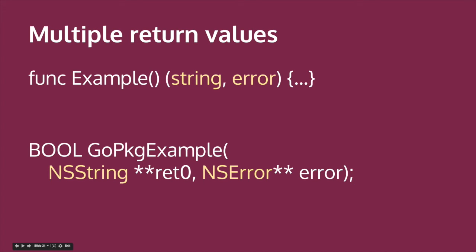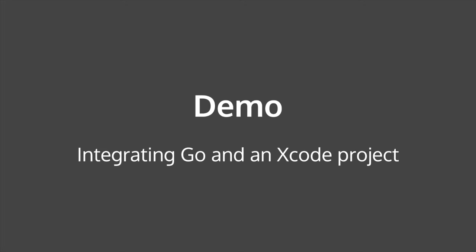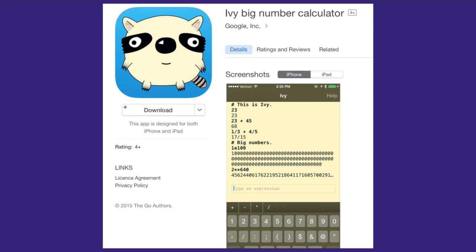One thing I found about the binding: in Go, functions commonly return multiple values — typically the return value plus an error. Error is just an interface type that accepts anything with an Error() method. In Objective-C you can't return multiple values unless you pass them in as pointers in your parameters, and that's actually how the binding handles it. If a function called 'Example' returns a string and an error, those become output pointer arguments on the binding.